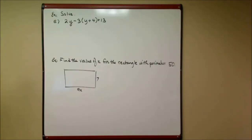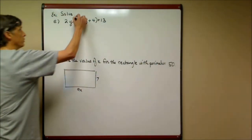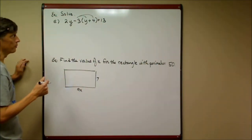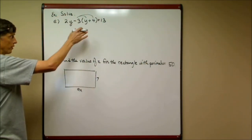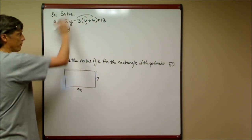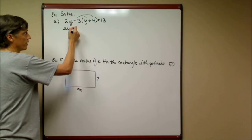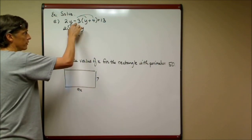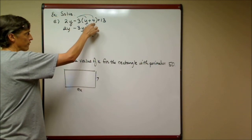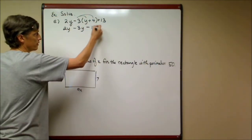This example has 2y minus 3 times the quantity y plus 4 equals 13. Now, the reason I saved this one for last, or second for last, is because of the minus sign that's in front of the 3 that's in front of the parentheses. We talked about these when we were simplifying expressions. I want to remind you that when you distribute here, because you must distribute here to get rid of the parentheses. We eliminate parentheses first. I'm going to get 2y. That part doesn't change. The minus 3 is like a negative 3 times the y. That's a negative 3y or a minus 3y. Careful now. The negative 3 times the positive 4 is a negative 12. That's a minus 12, and that equals 13.